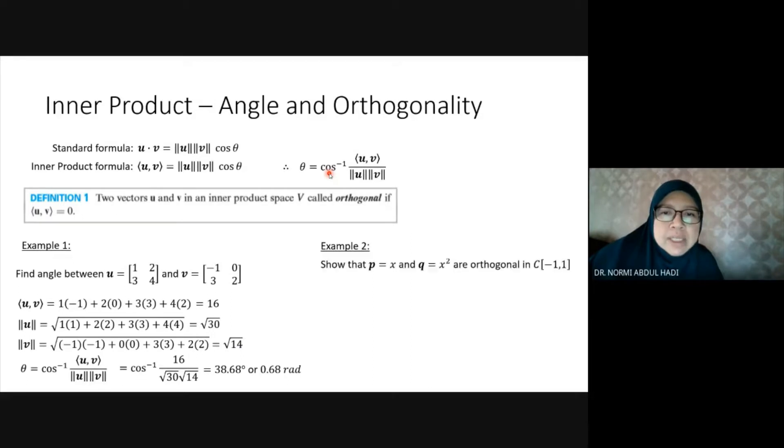Example 2: We have polynomials. Show that vector p and vector q are orthogonal. What is orthogonal? The inner product is 0. Limit range is -1 to 1, so we need the limit of integration.